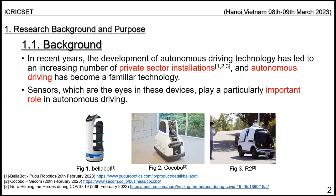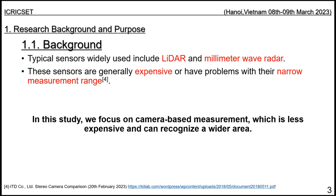In recent years, the development of autonomous driving technology has led to a growing number of private sector installations, and autonomous driving has become a widely recognized technology. In this field, forward distance measurement and three-dimensional measurement of the surrounding environment are indispensable. Typical sensors widely used include LiDAR and millimeter-wave radar. Although these sensors are highly accurate, they are generally expensive and have a narrow measurement range.